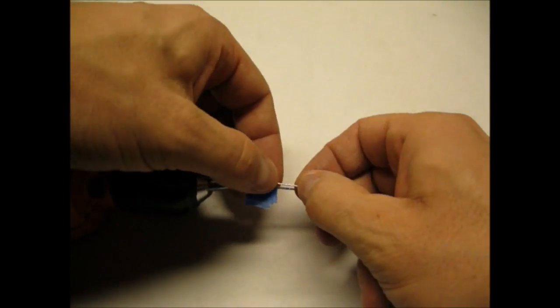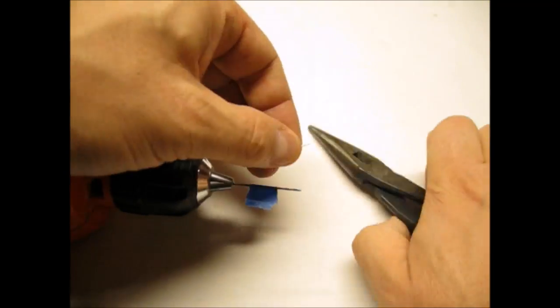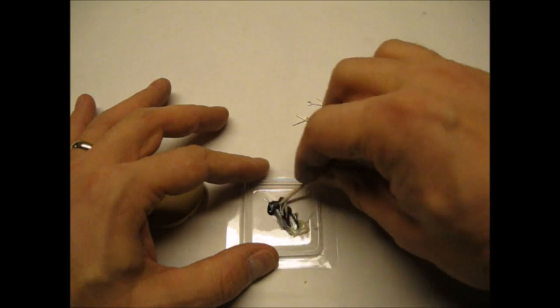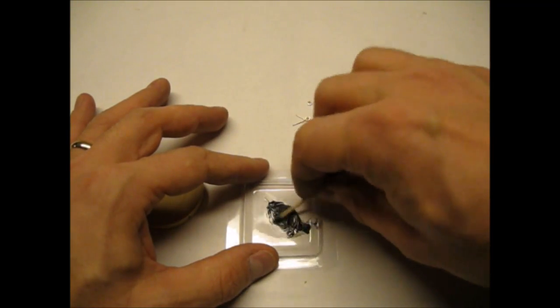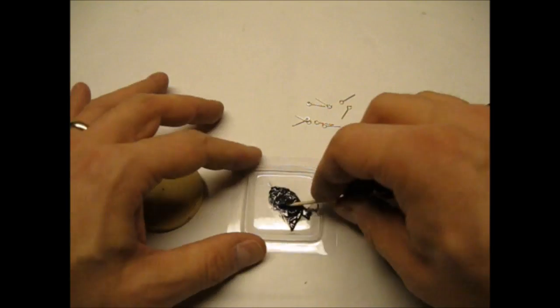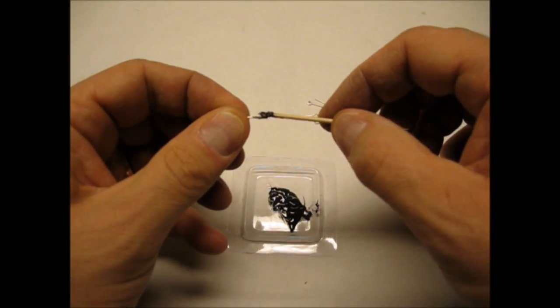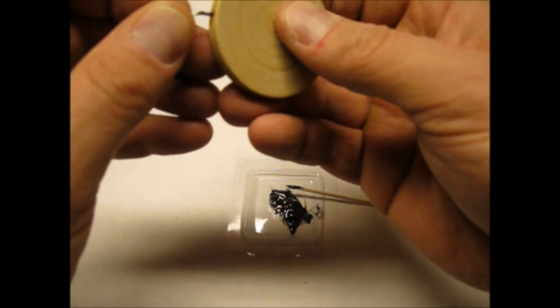I trimmed the eyelet pins down to fit in my drilled holes. I used two part epoxy to glue the eyelets into the disc. I made sure the eyelets were correctly aligned and let it cure.